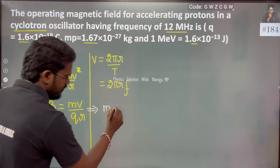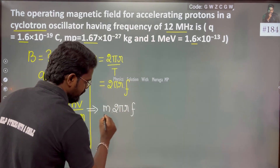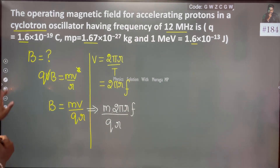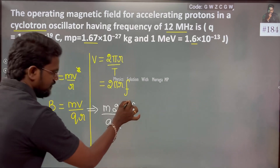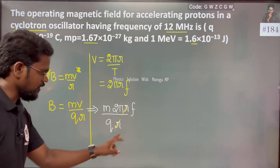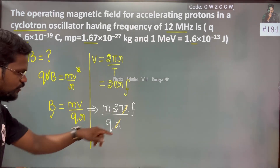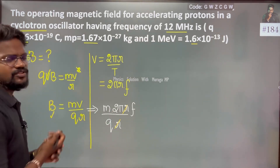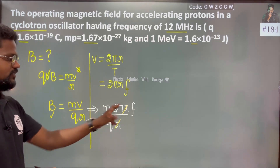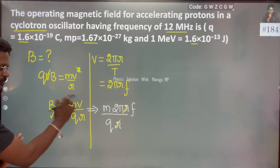Instead of velocity v, we substitute 2πrf. We do this because the formula B = mv/qr — substituting v = 2πrf — allows us to find the magnetic field without needing the velocity or the radius separately. That is why we are following this method.